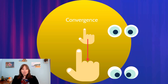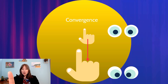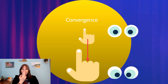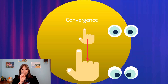Another binocular cue is convergence. Hold your thumb close to your nose, then move it far away while keeping your gaze on your fingernail. You'll feel your eye muscles change — your eyes look straight ahead when it's far away but cross toward your nose when it's close. This muscle feedback tells your brain how near objects are: as your eye muscles turn inward more, you perceive objects as closer.